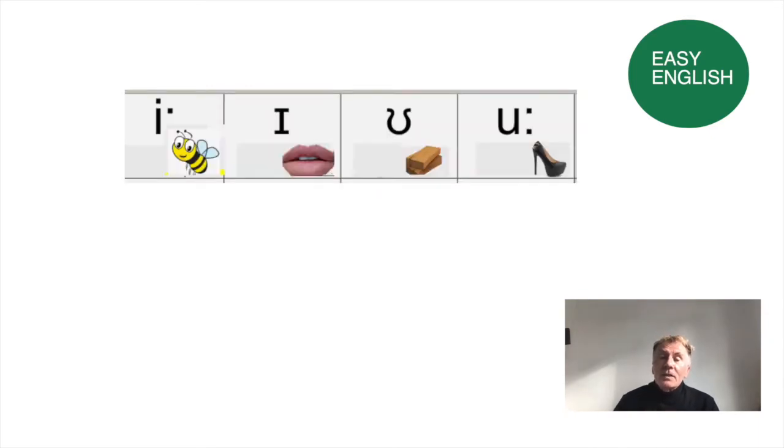If we have a look at that here, it's E as in bee, I as in lips, U as in wood, and U as in shoe. These are on the top line because the tongue is high in the mouth.